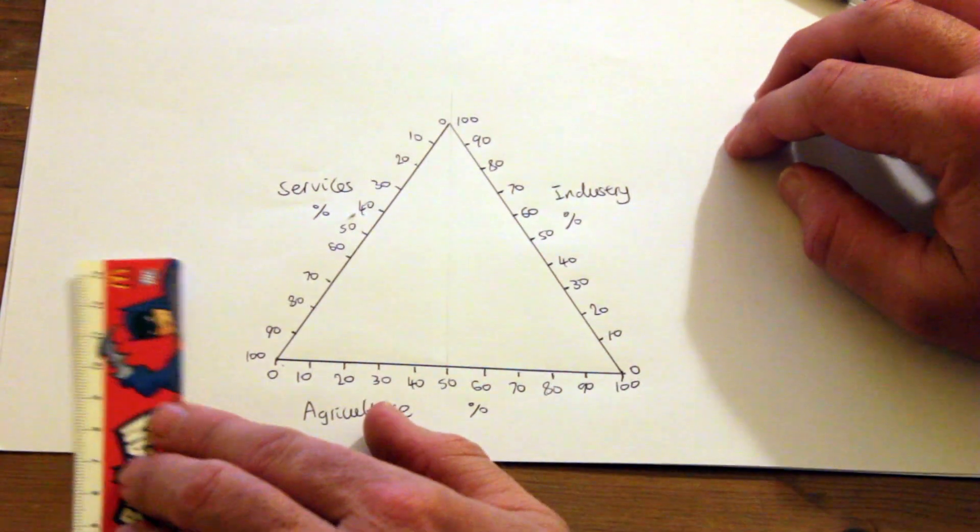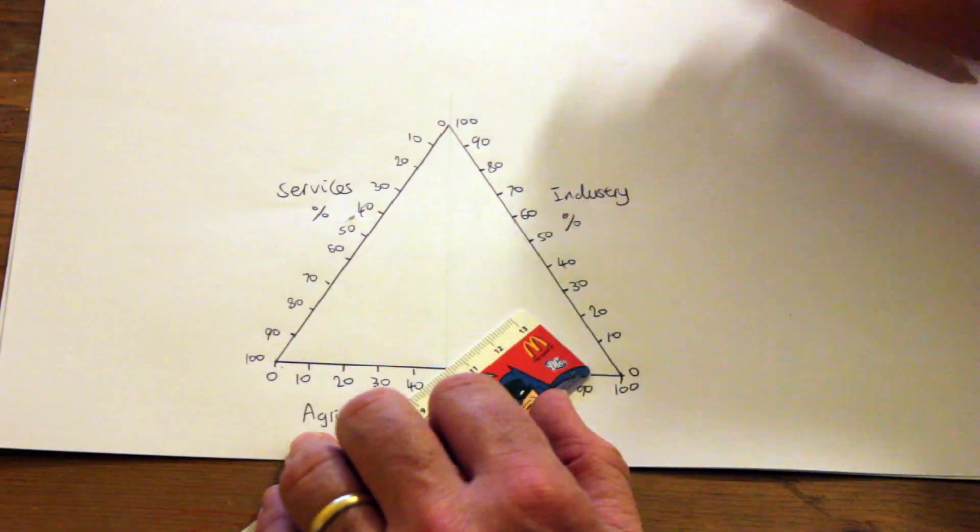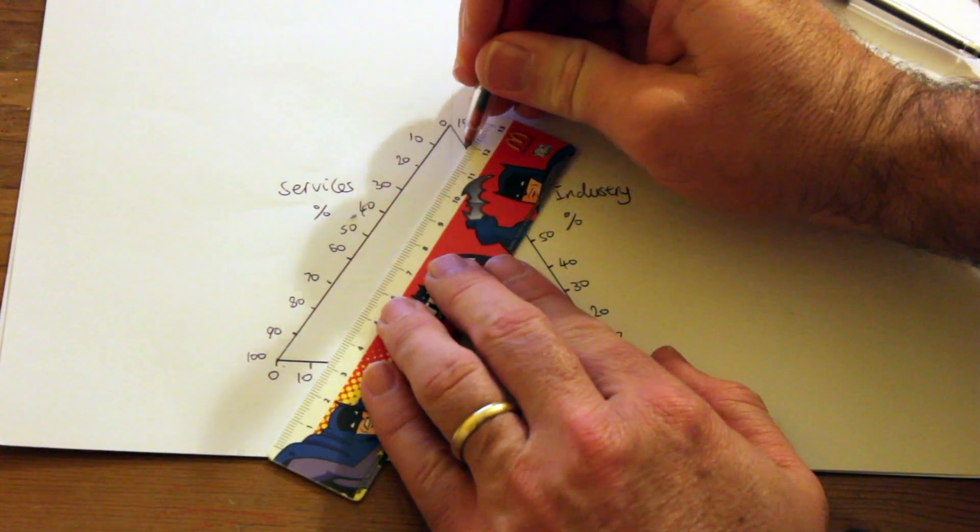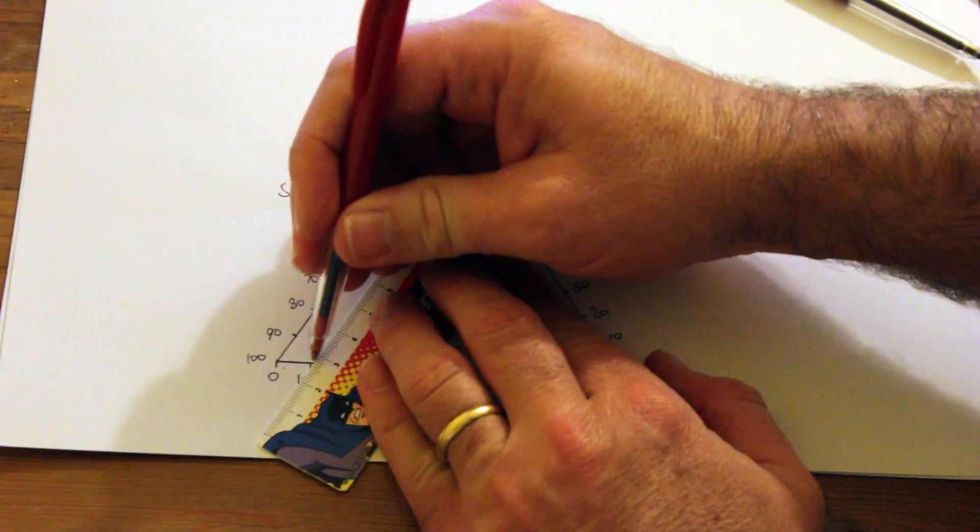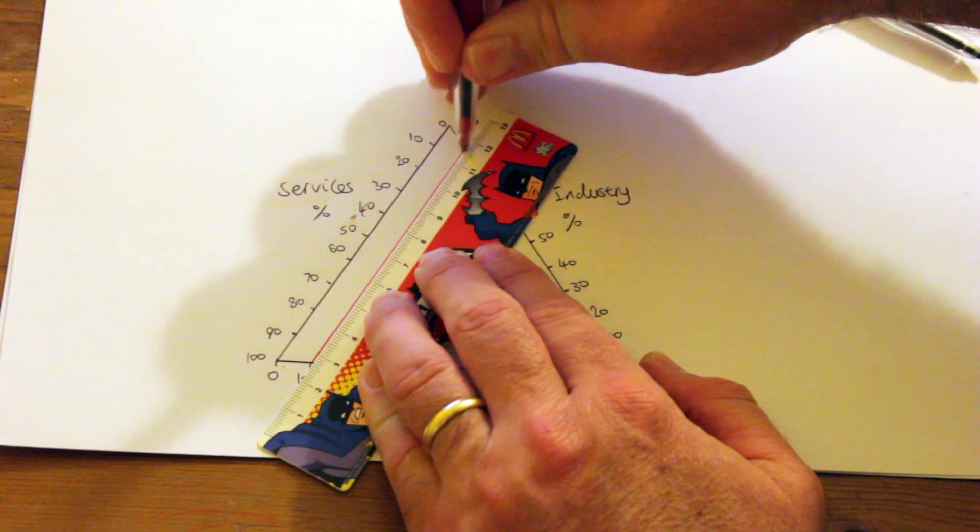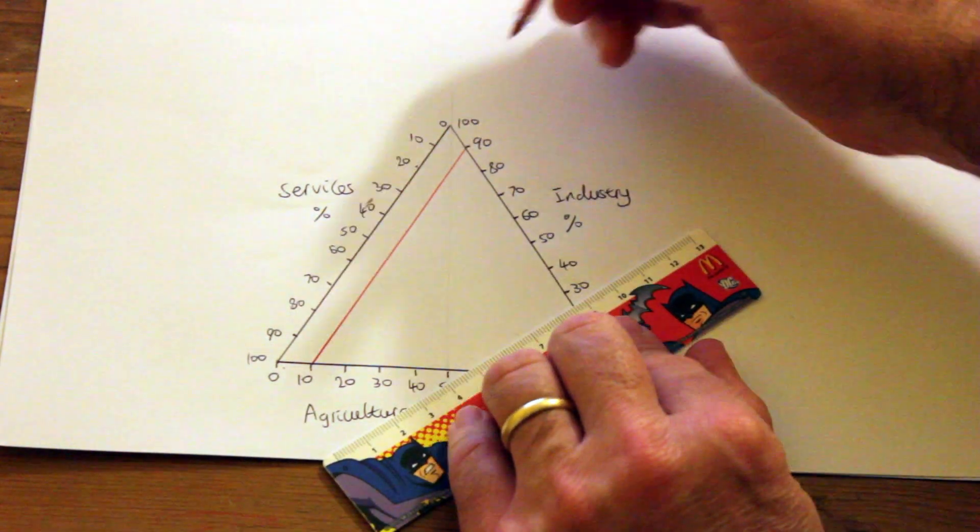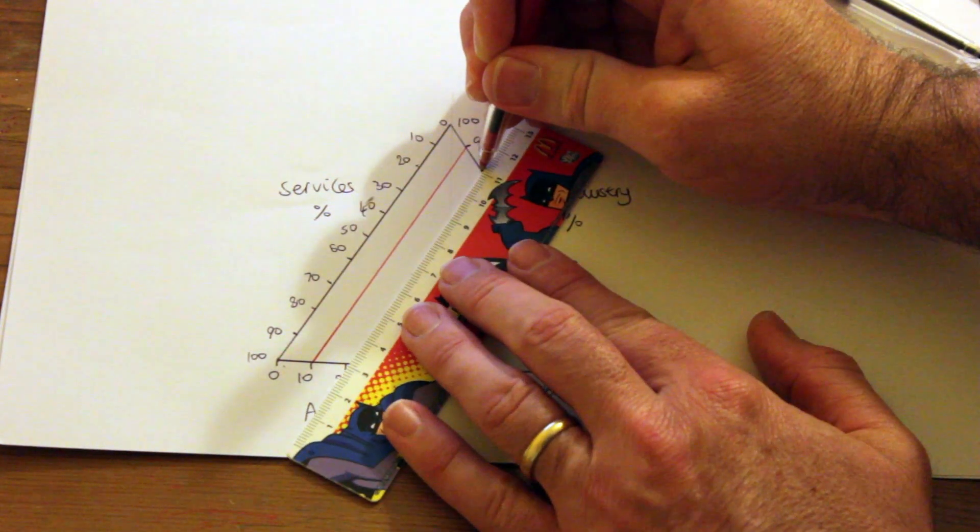Now I'm going to draw in three sets of parallel lines for all three axes, and they're going to be drawn at a 60 degree angle. So the 10 percent here will join up with the 90 percent on this line. We'll carry these all the way across.